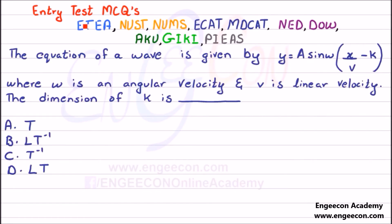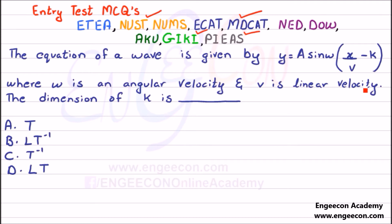Here we have a very important MCQ from an entry test point of view, relevant to entrance examinations especially NUST, GIK, PIEAS, MCAT, and MDCAT. The equation of a wave is given, where omega is angular velocity and V is linear velocity. We need to find the dimensions of K.